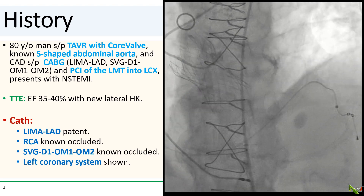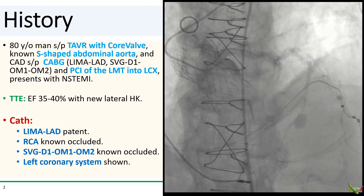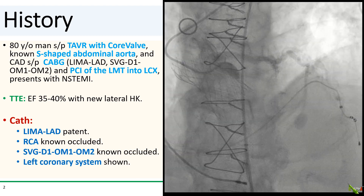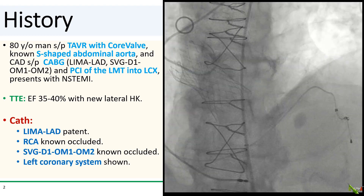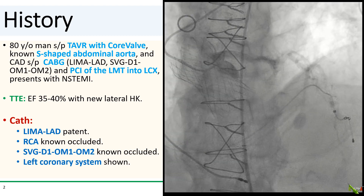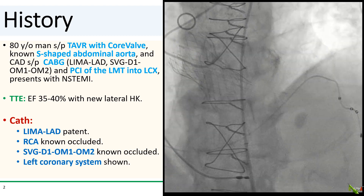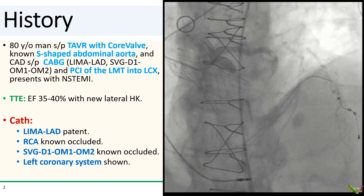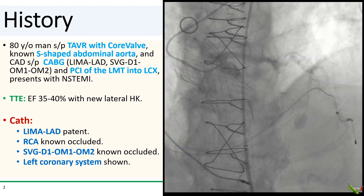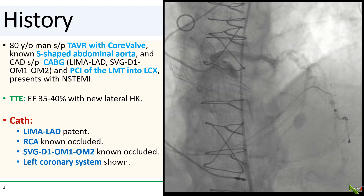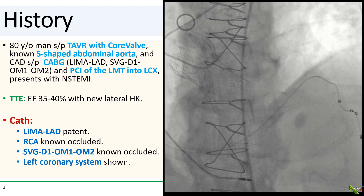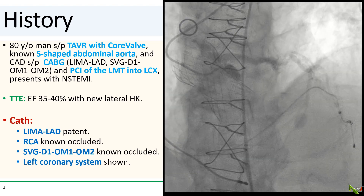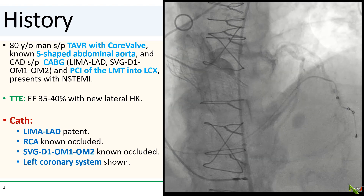Here you see the best image we got with a JL 3.5 catheter after a lot of manipulation. You can see that the left main is patent, but you don't really see much else. The opacification is really quite suboptimal.